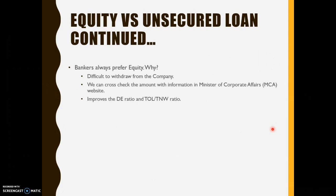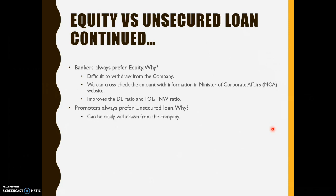Infusing equity always improves the debt-equity ratio and the TOL/TNW ratio, which form the benchmark while assessing a term loan. Any improvement in DE ratio and TOL/TNW gives comfort to the banker that the company is more interested in doing business with its own money. Now, promoters always prefer unsecured loans because they can easily withdraw it from the company — they need not inform or update the details with the ROC, so they can easily withdraw the unsecured loans.